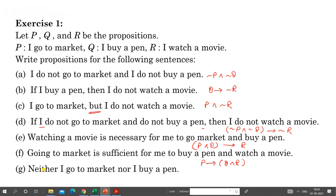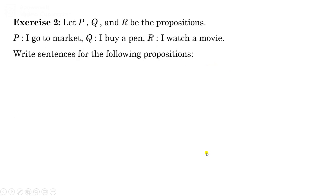'Neither I go to market nor I buy a pen.' The 'neither...nor' construction is basically negation AND. So 'I do not go to market and I do not buy a pen' is written as negation P AND negation Q. This completes Exercise 1.